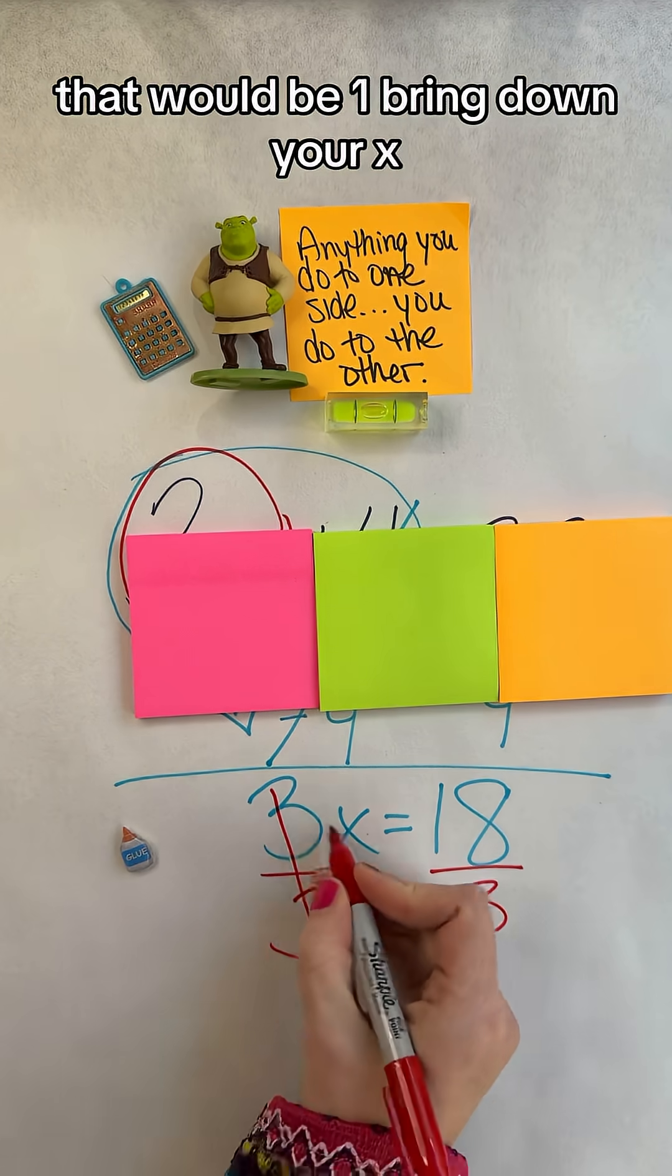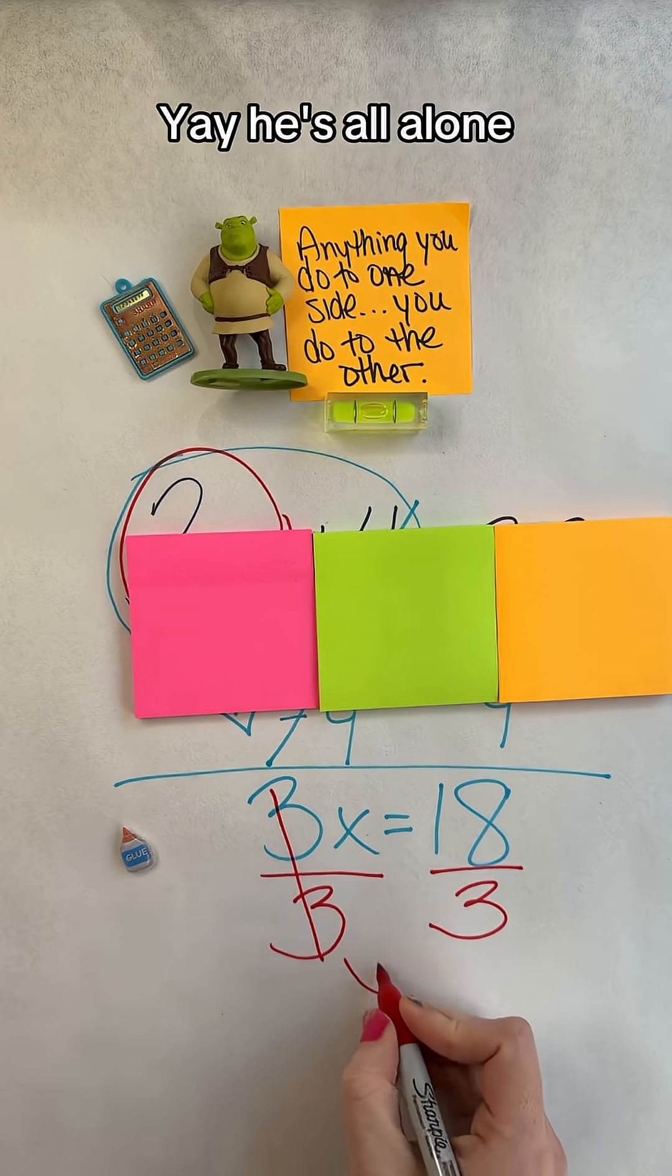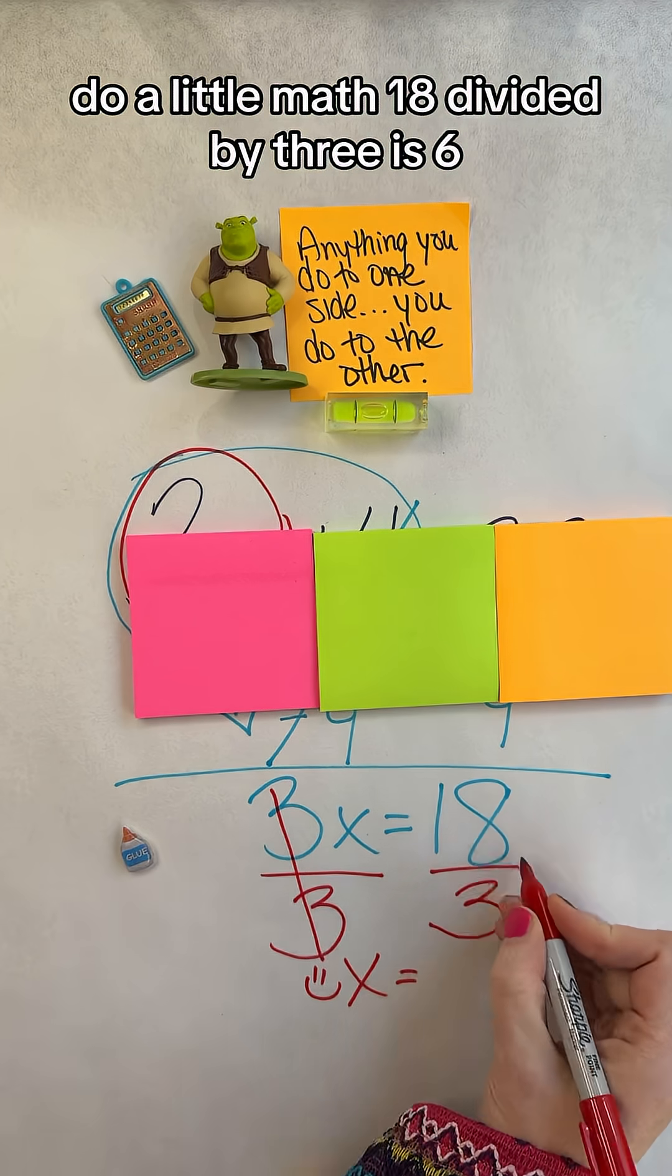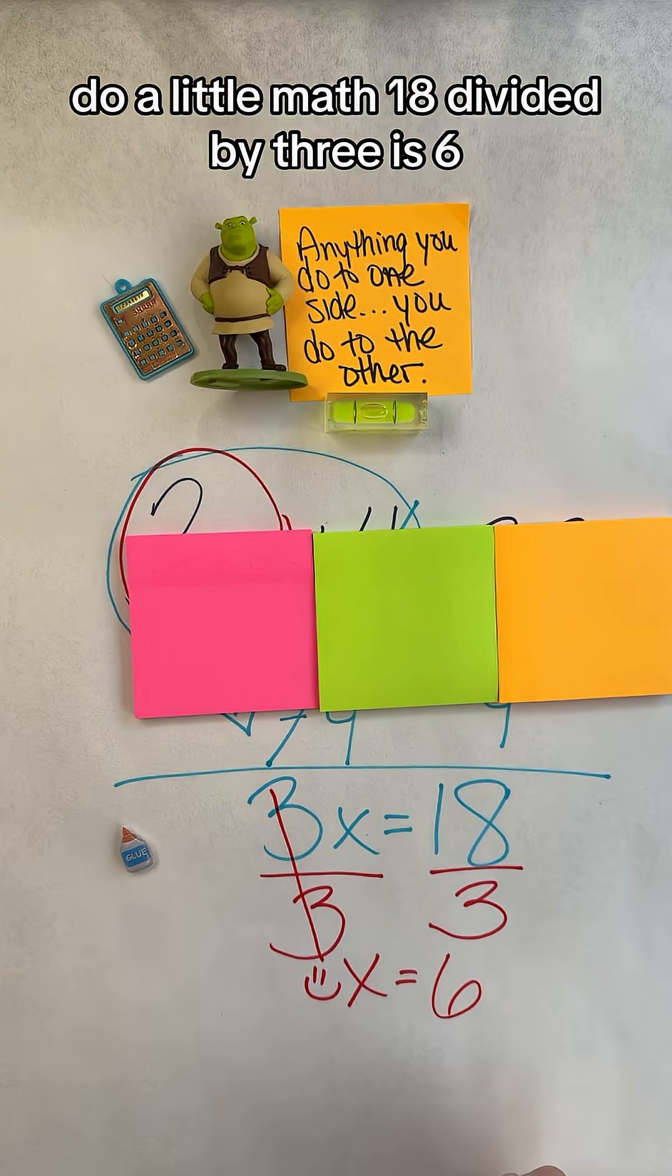These guys cancel out. Technically, that would be 1. Bring down your x. Yay! He's all alone. Do a little math. 18 divided by 3 is 6.